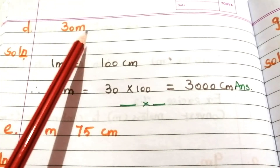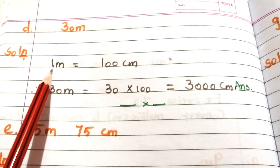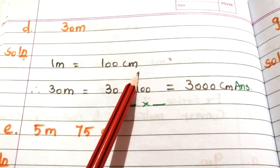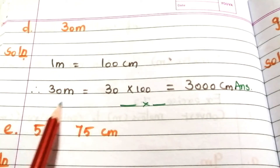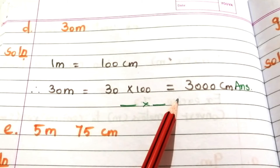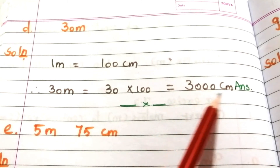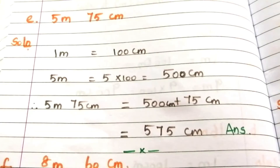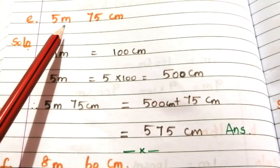Problem D: 30 meters. Solution: 1 meter equals 100 centimeters, therefore 30 meters equals 30 × 100 = 3000 centimeters.